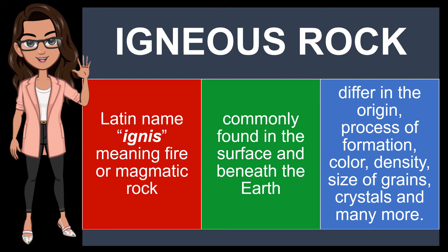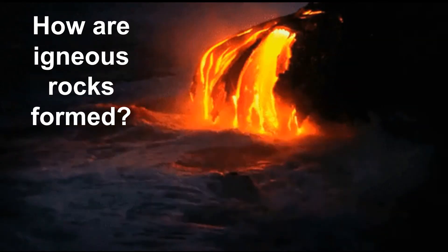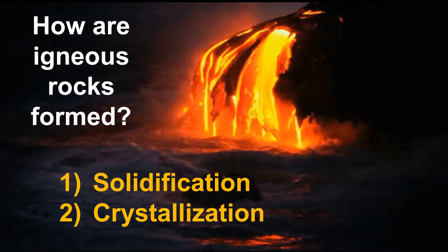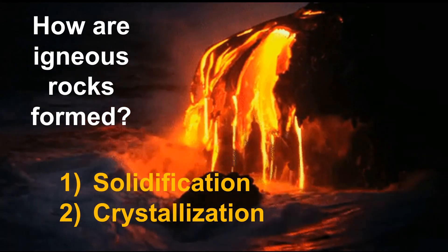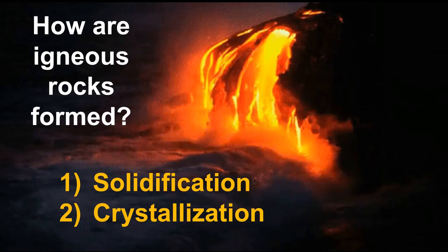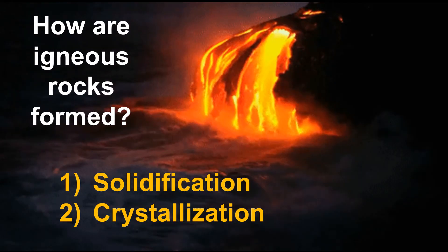Not all Igneous Rocks have the same physical and chemical characteristics. They differ in origin, process of formation, color, density, size of grains, crystals, and many more. Igneous Rocks are formed through the process of solidification and crystallization of molten rocks, magma, and lava. When hot molten rocks reach the surface of the earth, they undergo changes in temperature and pressure, causing them to cool, solidify, and crystallize. Moreover, there is also solidification and crystallization of magma beneath the earth.